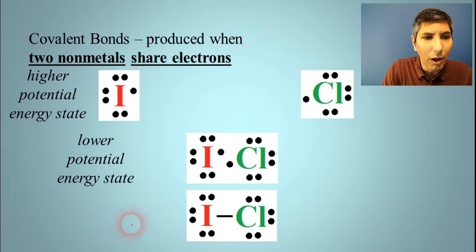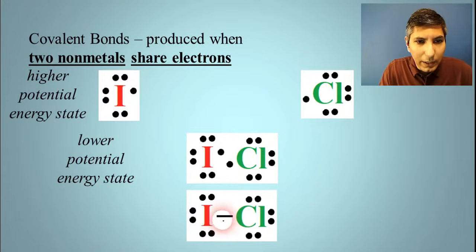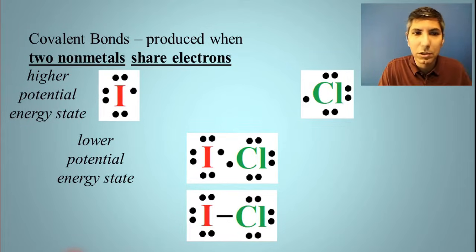And whenever we draw this structure, we take that shared pair that's in the middle and we replace it with a line. That line represents the fact that we have a covalent chemical bond there. So when you see that line or sometimes two lines, that would mean a double bond or three lines, right like in that same spot would be a triple bond. We'll see some examples of that here shortly.